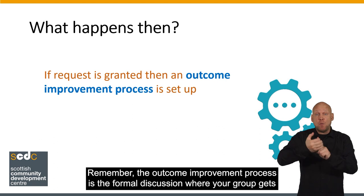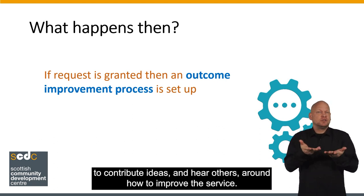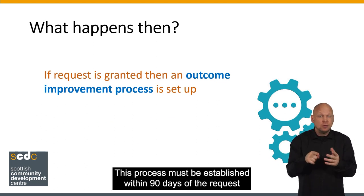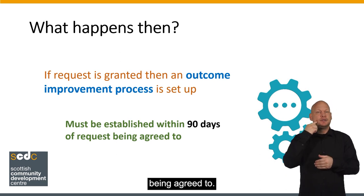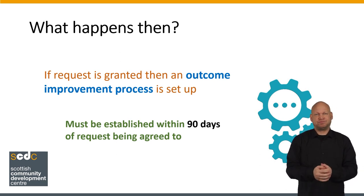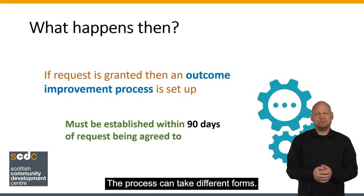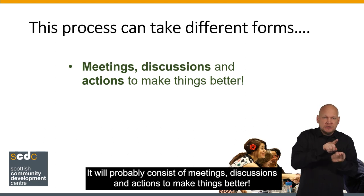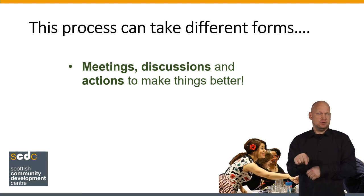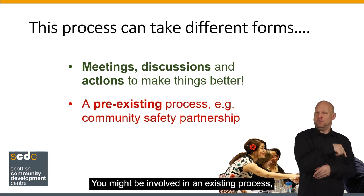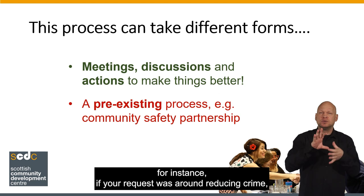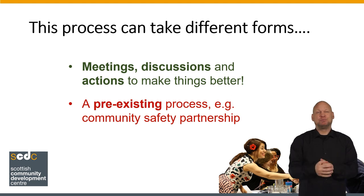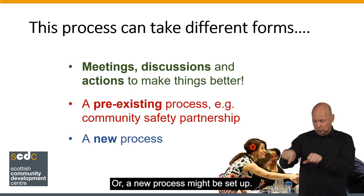Remember, the outcome improvement process is the formal discussion where your group gets to contribute ideas and hear others around how to improve the service. This process must be established within 90 days of the request being agreed to. The process can take different forms — it will probably consist of meetings, discussions, and actions to make things better. You might be involved in an existing process; for instance, if your request was around reducing crime, you might be involved in a community safety partnership. Or a new process might be set up.